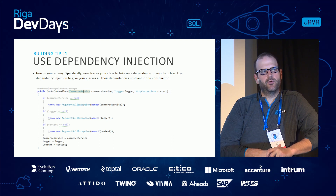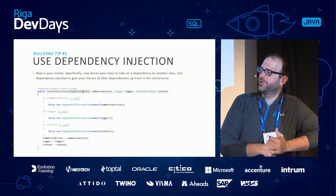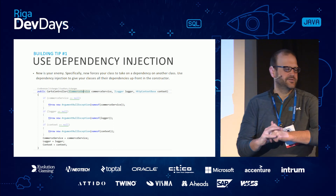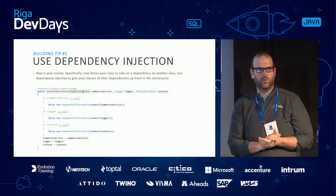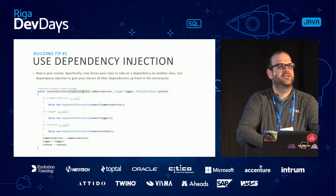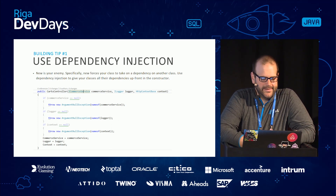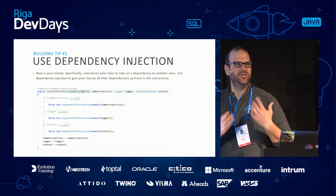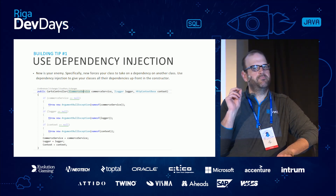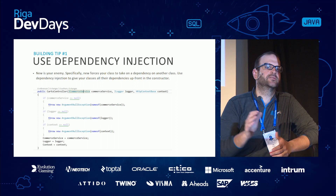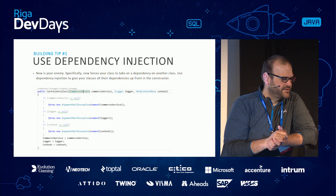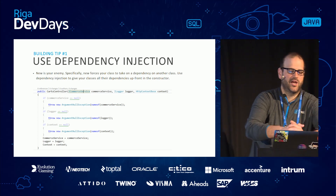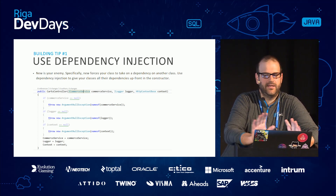First tip — almost a prerequisite — use dependency injection. With .NET it's built into the framework now, so it's a lot easier than a couple years ago. This is a prerequisite for pretty much any hardcore unit testing beyond the very basics. 'New' is your enemy — whenever you type 'new,' you are taking a hard dependency on that object or class. You want to use dependency injection to give your classes everything they need in the constructor.